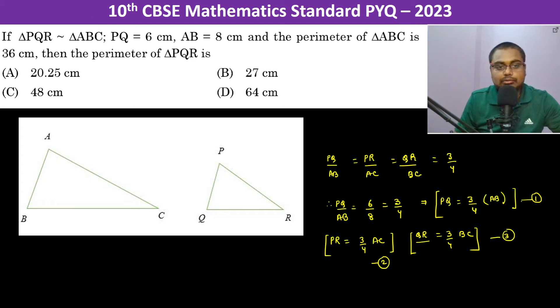So therefore, now we have to find out the perimeter of triangle PQR. Perimeter of triangle PQR is equal to PQ plus PR plus QR. This should be equal to 3 by 4 of AB plus AC plus BC.